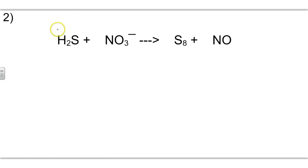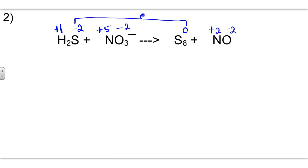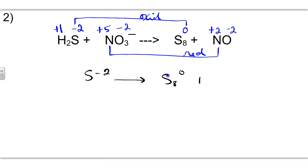In our second example, hydrogen is plus one; one times two is two, so sulfur in H₂S is negative two. Oxygen is negative two; two times three is six, so nitrogen in HNO₃ is plus five. S₈ is neutral, so sulfur gets a zero. Oxygen is negative two, making nitrogen in NO a plus two. Sulfur goes from negative two to zero — that is the oxidation — and nitrogen goes from plus five down to plus two — that is the reduction. For the half-reactions: zero is the higher oxidation state, so S⁻² yields S₈⁰ plus electrons; plus five is higher, so N⁺⁵ plus electrons yields N⁺².